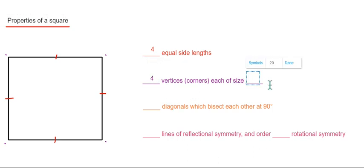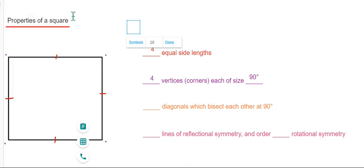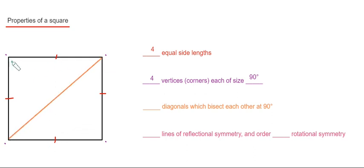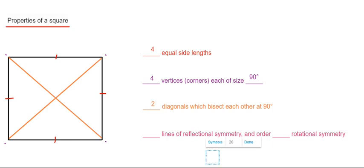Next, let's look at the diagonals. The diagonals pass from one corner to another corner, so we have one, two, and also the diagonals dissect each other at right angles.